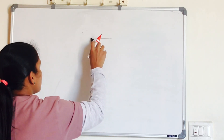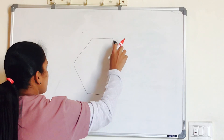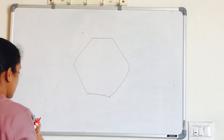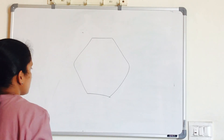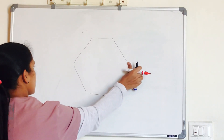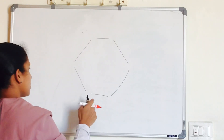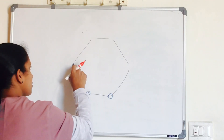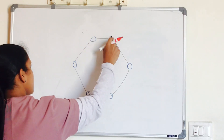To know the Circle of Willis, first you have to draw a hexagon, which means it has six ends. See the lower two ends, middle two ends, and upper two ends. These lower two ends are related to the posterior cerebral artery.